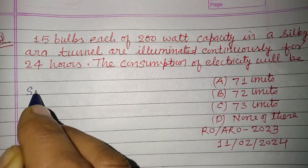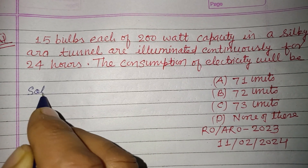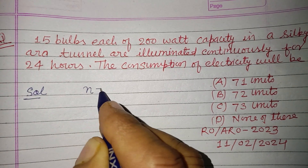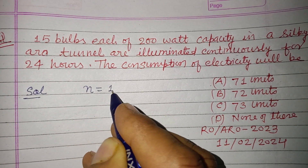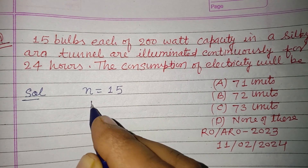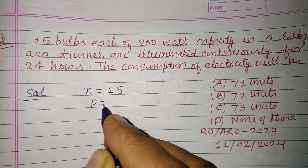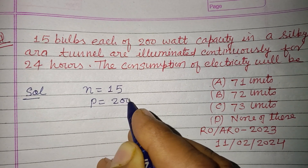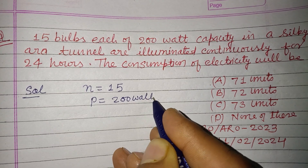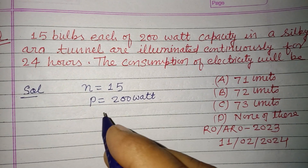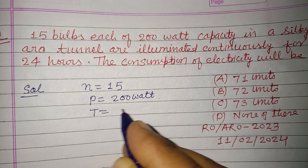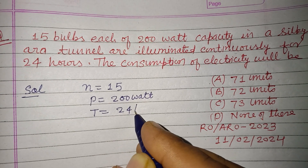So students, here the number of bulbs is 15, the capacity or power of each bulb is 200 watt, and the time they are illuminated is 24 hours.